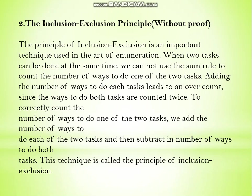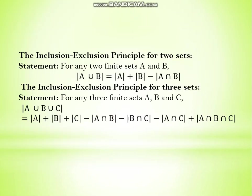Since the ways to do both tasks are counted twice, to count correctly we apply the Inclusion-Exclusion Principle. For any two finite sets A and B, since A∪B is the set where elements are either in A or in B or in both, the cardinality of A∪B equals cardinality of A plus cardinality of B minus cardinality of A∩B.